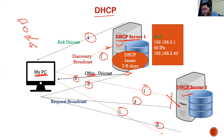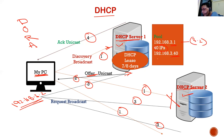Server 1 sends an acknowledgement saying: I have given you an IP address. My pool starts from 3.1 to 3.40, giving me 40 IPs in the pool. The server assigns me 192.168.3.2 and makes a note that it has given 3.2 to the client for a lease of seven or eight days by default.